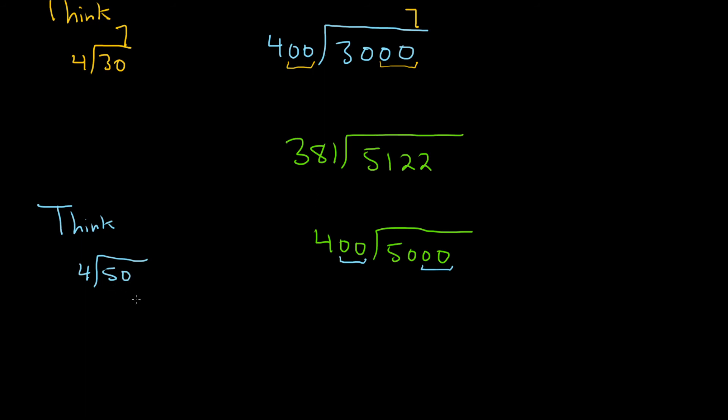So how many times does 4 go into 50? Well, 4 times 10 is 40, 4 times 11 is 44, 4 times 12 is 48. So about 12. So the answer here is about 12.